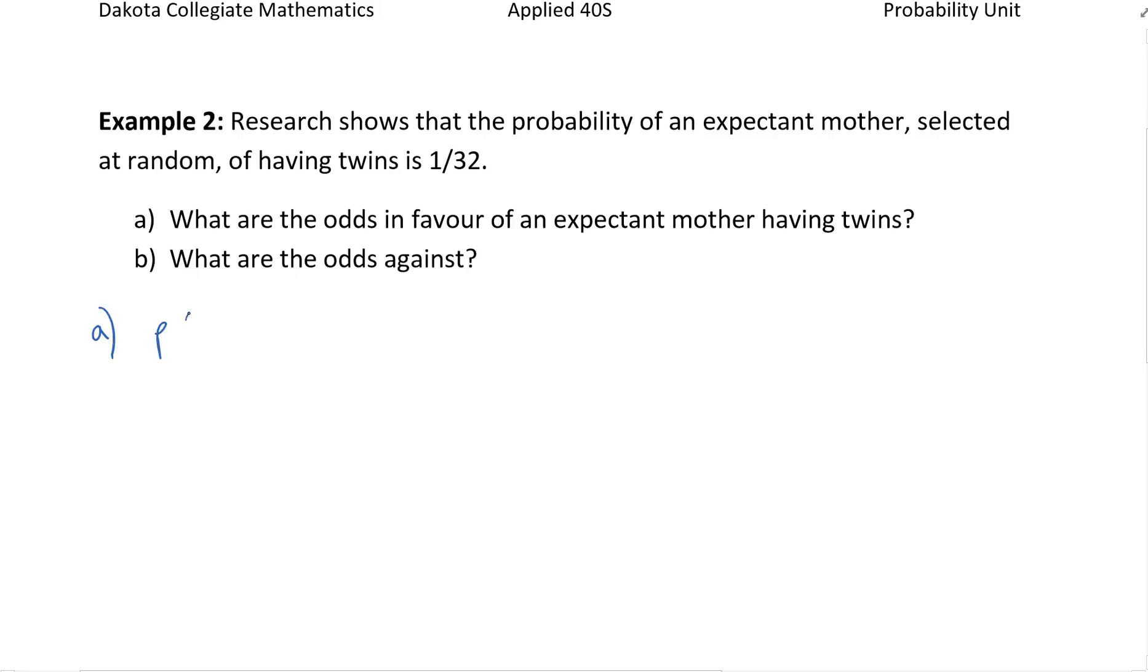The probability of twins is 1 out of 32, and the probability of not having twins would be 31 out of 32. When we're looking at odds, we're essentially just looking at the numerators. So we would have our favorable outcome being 1 to 31.